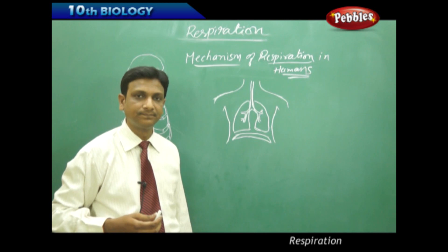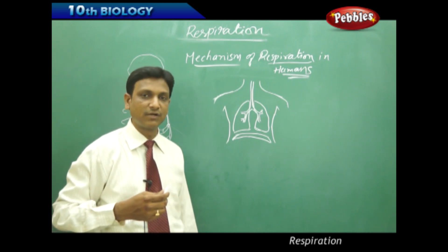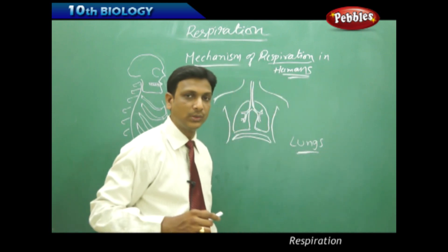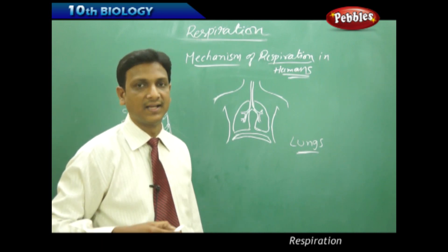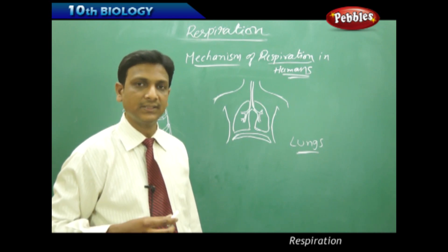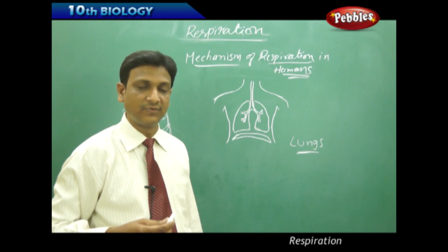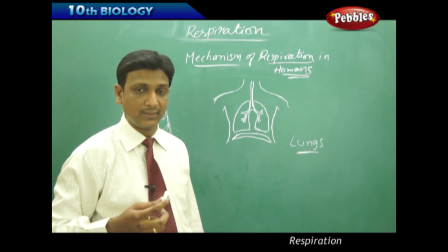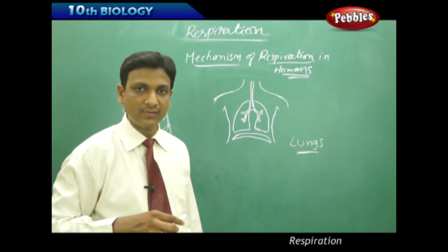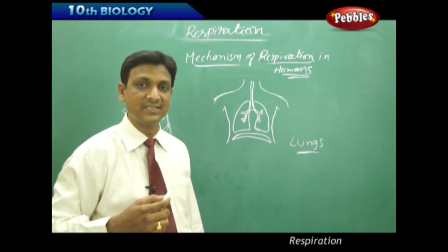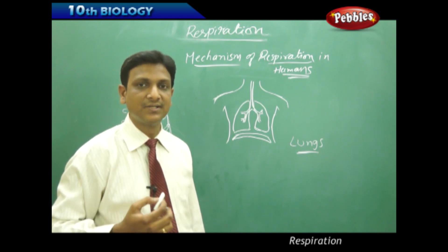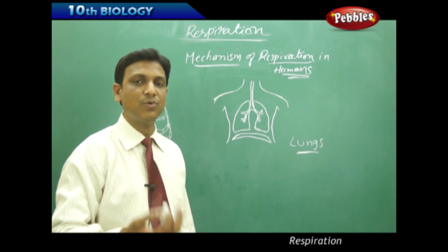What are the respiratory organs? The respiratory organs found in humans are lungs. Now, let us see how the air enters and exits the lungs. Lungs are made up of tiny units called alveoli. The air has to enter the lungs, and for that, the lungs need to be expanded and contracted. But the lungs cannot make these expansions and contractions on their own — there are other parts and muscles helping the lungs to expand and collapse, to move air in and out.